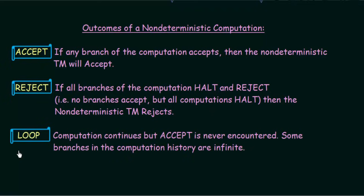The last outcome is loop. Computation continues but accept is never encountered — some branches in the computational history are infinite and go into a loop without reaching an accept state. The outcomes are the same in deterministic and non-deterministic Turing Machines, but the way we define them may be a little different.